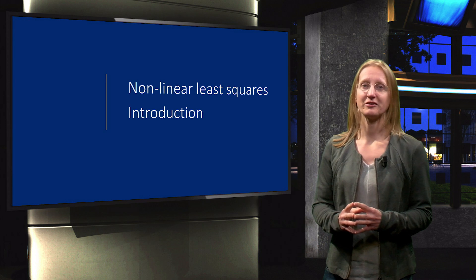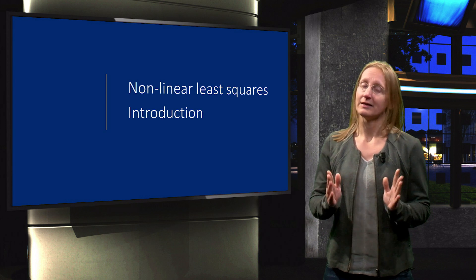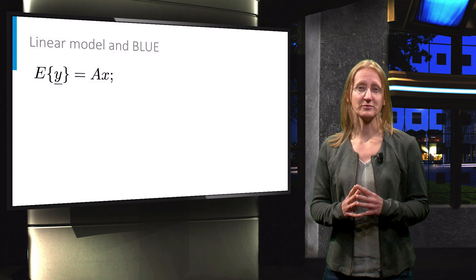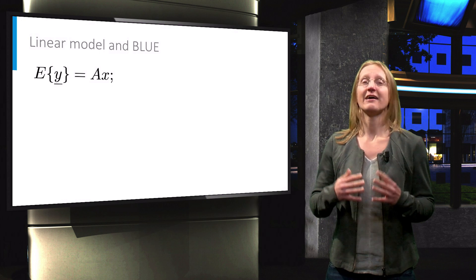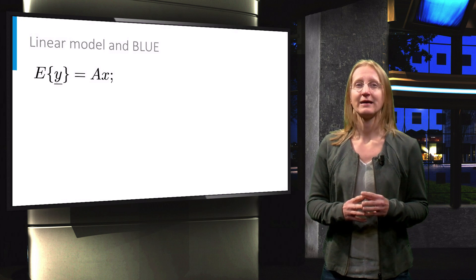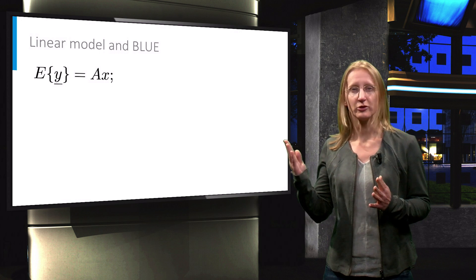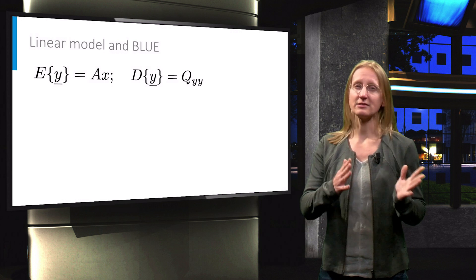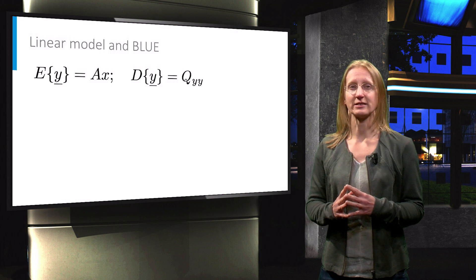Welcome to this unit on non-linear least squares estimation. This course mainly focuses on linear estimation problems, by which we mean that the unknown parameters x have a linear relationship with the observables y, and this linear relationship is described by the functional model. Together with the stochastic model, this allows to obtain the best linear unbiased estimator of x.